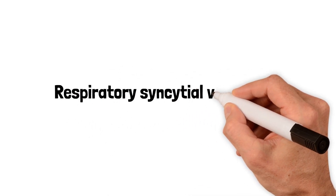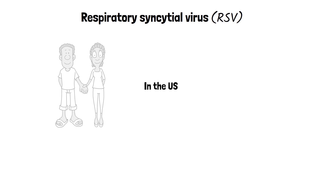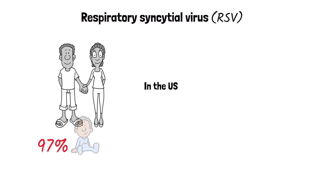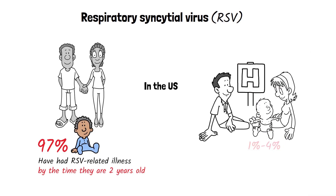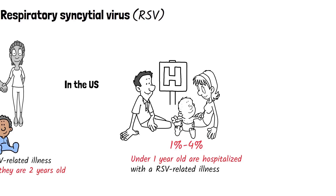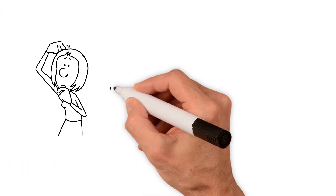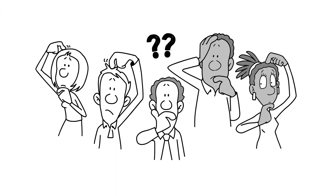Respiratory syncytial virus, also known as RSV, is a common cause of respiratory infections in young children and the main cause of infant hospitalization in the U.S. But did you know RSV infection can cause serious illness in older adults?